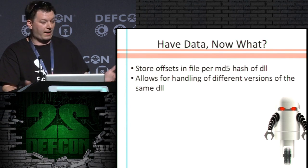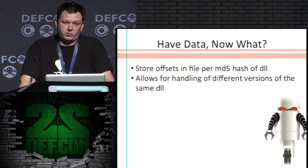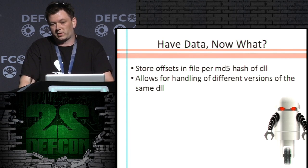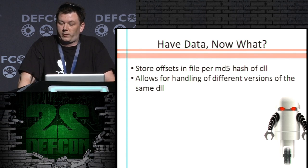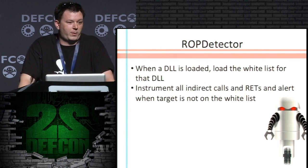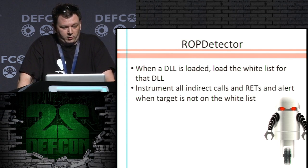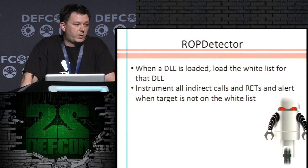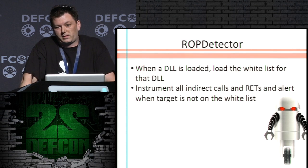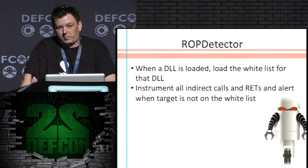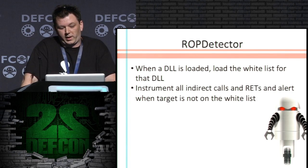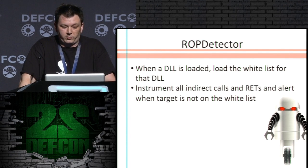Now that we have the data, I store all of them by DLL and by MD5 hash, because DLLs can have different versions and I need to account for that. So now that we have all this, let's detect the ROP. We have another PIN tool: when a DLL is loaded, PIN gives you the location of that DLL on disk. I open up the file, hash it, load the whitelist for that DLL, and then instrument all indirect calls and returns. If you're not on the whitelist, you're flagged as a ROP.